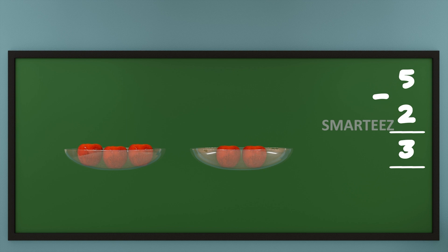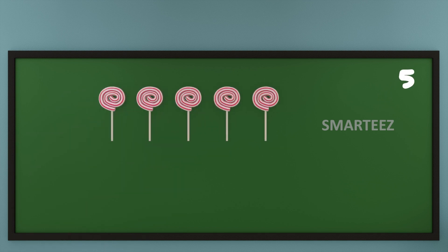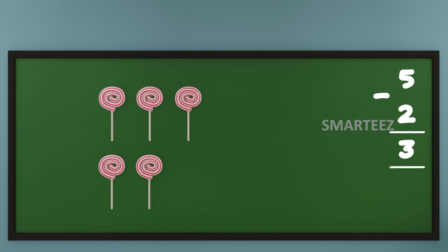This works the same with candies too. In fact, whenever we subtract two from five or anything, we'll always get three. Let's take a look. That's five candies in total. Let's subtract two candies out of it. That's one candy. And that's a second candy. What we have left is one, two, and three candies.